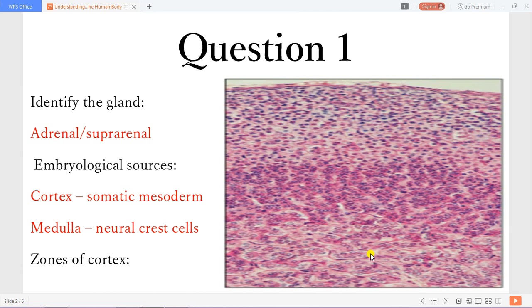How to differentiate these zones? The first zone, you can appreciate, you have very dark staining nuclei with pink cytoplasm.